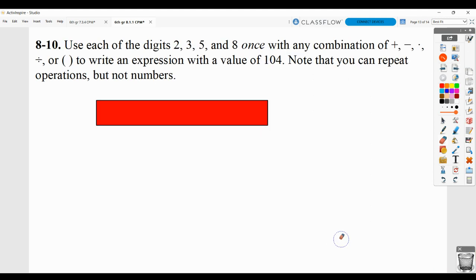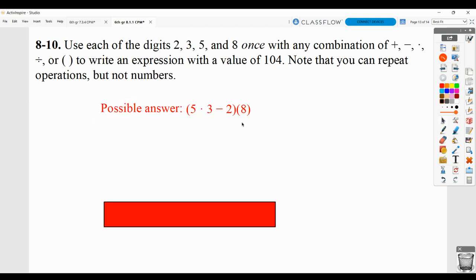Here you have to use these digits, each once with any combination of add, subtract, multiply, divide, or parentheses, to write an expression with a value of 104. You're allowed to repeat operations, but not numbers. Now there's probably quite a few different possibilities that will work here. This is just one of them. You do not have to have this one. But 5 times 3 would be 15, minus 2 would be 13, and 13 times 8 would give you the 104. You see that each term is only being used once, and then we're using our operation symbols as well as parentheses. You could come up with a different set that would also work. This is just one possible answer.